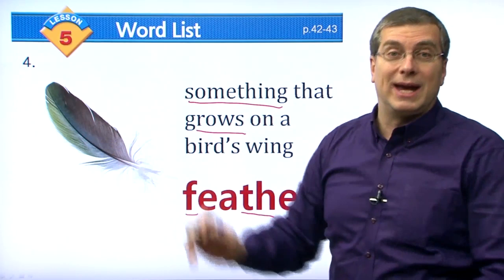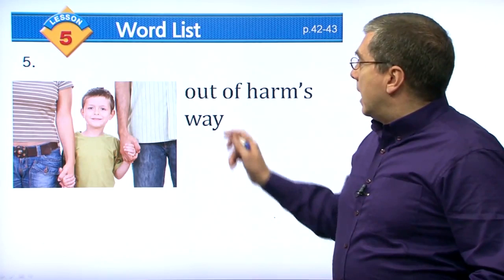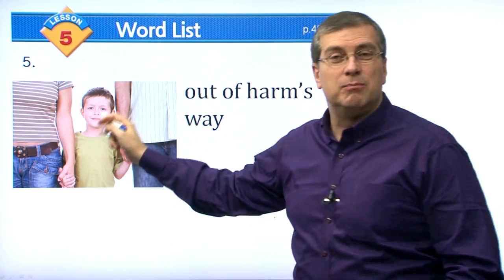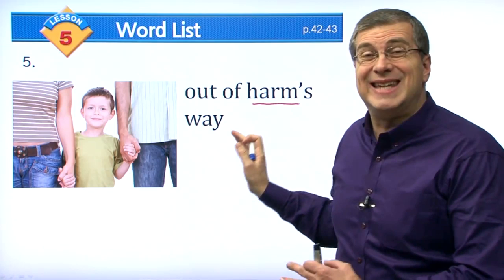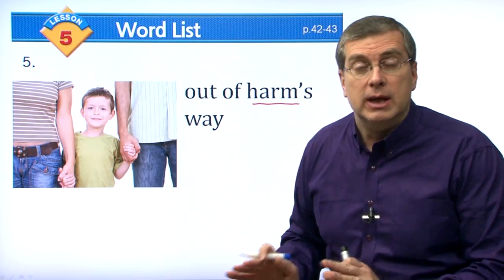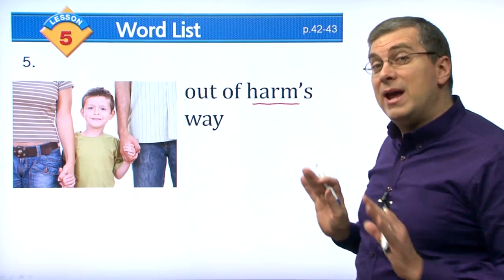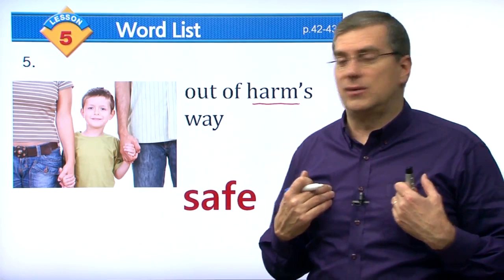Now this is an interesting picture. This boy is between his father and his mother, and his parents are holding his hand. He's out of harm's way. Harm is like danger — something that can hurt you. If you are out of the way of danger, what are you? You are safe. He's safe between his parents.